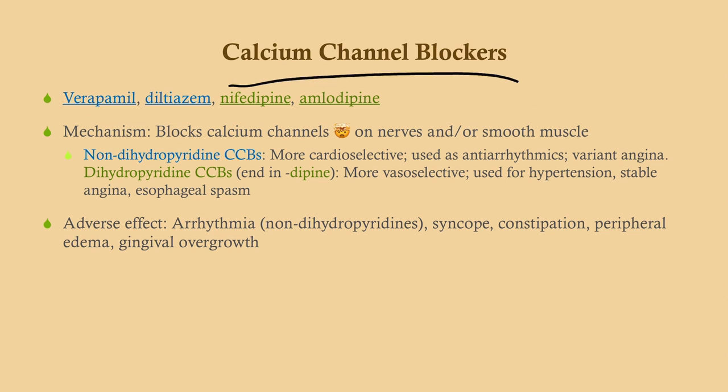The non-dihydropyridines are used as antiarrhythmics and also for variant angina — Prinzmetal's angina. Think of a 25-year-old with angina, pristine coronary arteries, and vasospasm. What we use for hypertension is the vasoselective — or dihydropyridine — calcium channel blockers. These can be used for hypertension, stable angina, and esophageal spasm. They're more vasoselective, so they don't have the cardiac depressant effect of verapamil or diltiazem. The memory trick: dihydropyridine ends in 'dine,' and all dihydropyridine drugs end in '-dipine.' Kind of sounds the same.